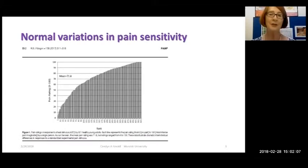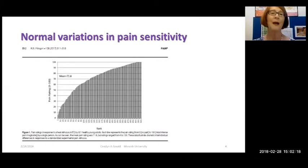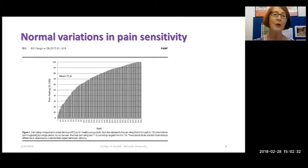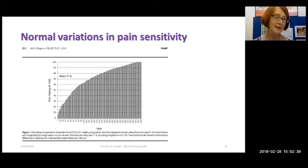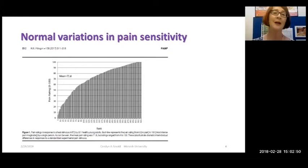I want to emphasise the huge variability in our individual physiologies. This is a slide from a conference in 2016 from researcher Roger Fillingim. It's a study of thermal heat pain responses across 321 healthy young adults. What you can see is that the pain rating for the same stimulus is enormously variable across these 321 people, with the lowest having a pain level of only 5 out of 100, and at the other end of the spectrum, some scoring 100 out of 100. The mean was 71.8.